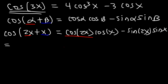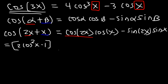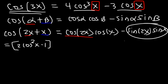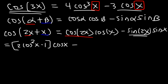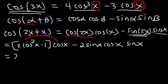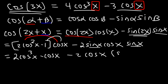Now cos2x can be replaced using the double angle formula. Our goal is to convert all angles to x, and since the right side is all in terms of cosine, we use cos2x = 2cos²x - 1. Multiplying (2cos²x - 1) by cosx gives 2cos³x - cosx. For sin2x, that's 2sinxcosx, and multiplied by another sinx gives 2cosxsin²x. So we now have 2cos³x - cosx - 2cosxsin²x.